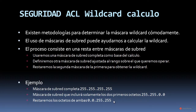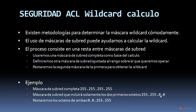Esto podríamos hacerlo más fácilmente con una red de clase C: 255.255.255.255 menos 255.255.255.0 nos quedaría 0.0.0.255, que es una de las máscaras Wildcard que vamos a utilizar en nuestro laboratorio. También podríamos hacerlo con un rango determinado; por ejemplo, si la máscara de subred fuera 255.255.255.128, la máscara Wildcard sería 0.0.0.127, ya que obtenemos la resta de 255 menos 128. Es bastante simple y a medida que se trabaja con ello se vuelve más cotidiano.